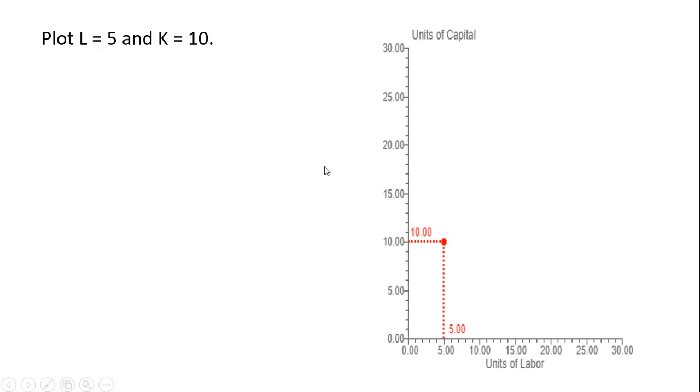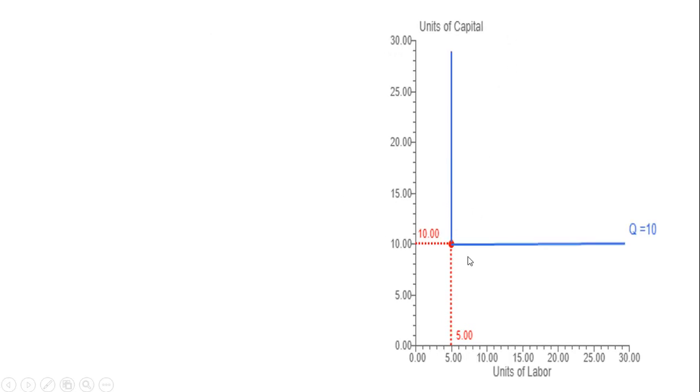So let's see that on the next slide. So this is what that isoquant looks like for Q equals 10 with fixed proportions.